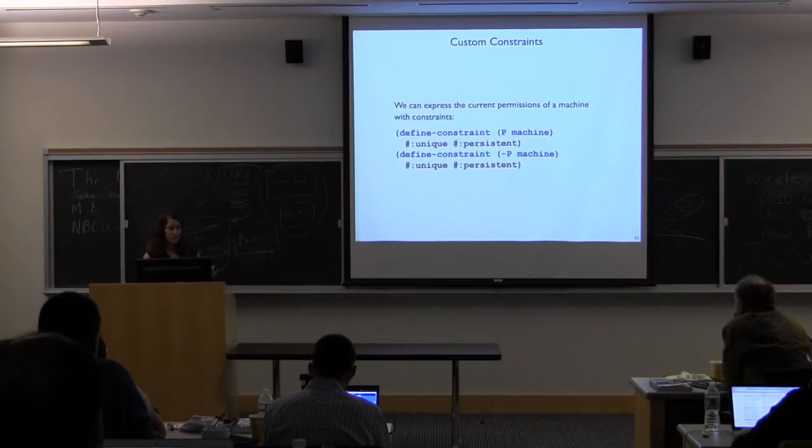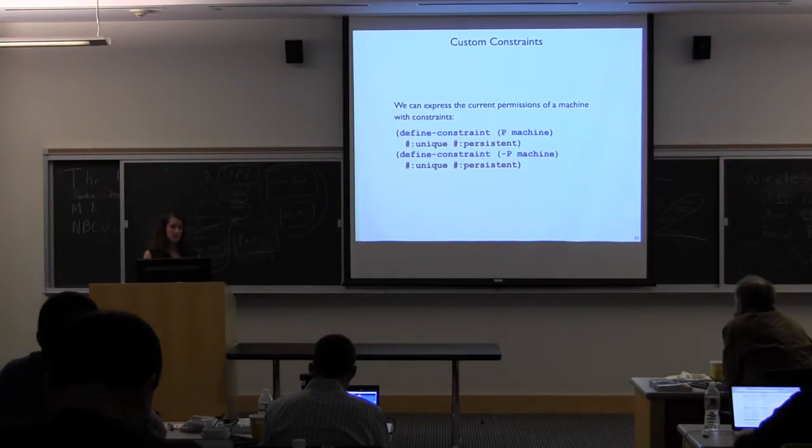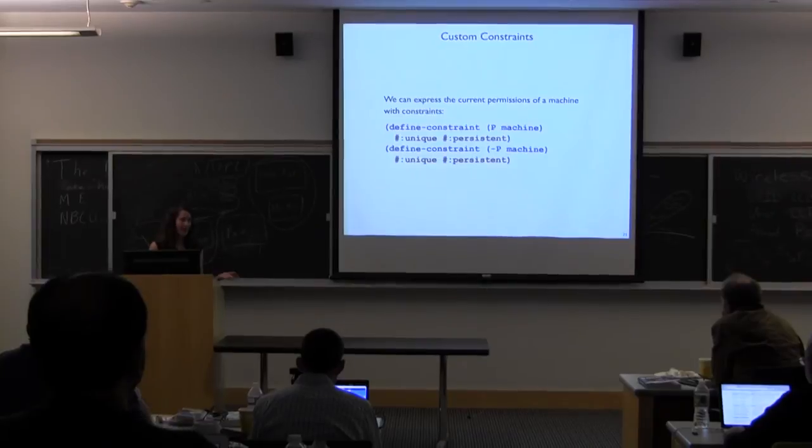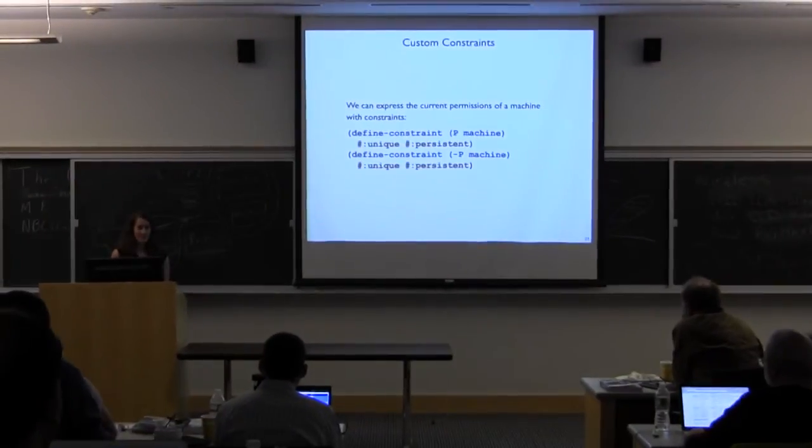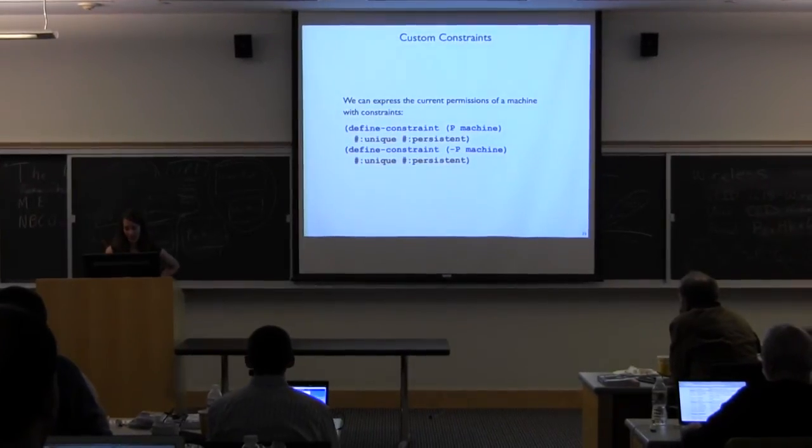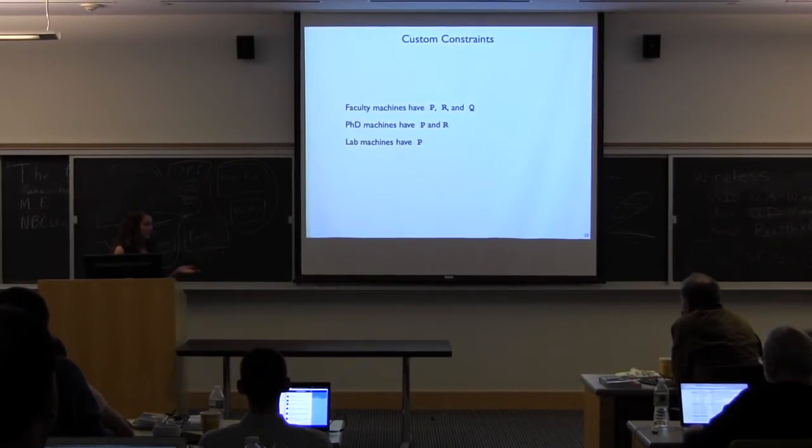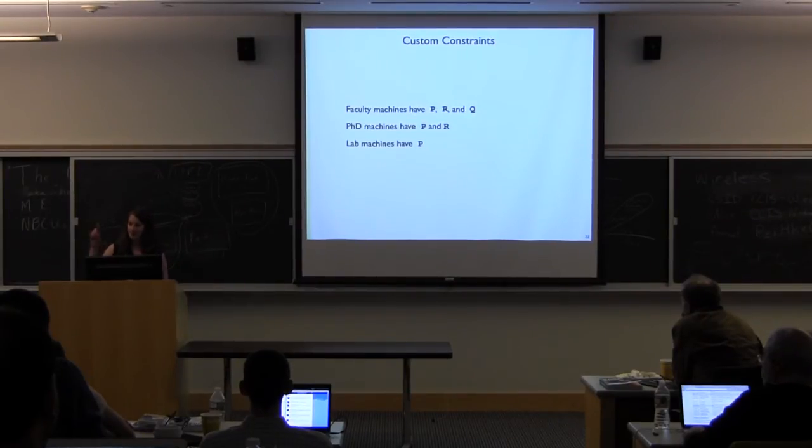So we're going to express this with custom constraints within C-Cannon. So we can express the current permissions of a machine with constraints that look like this. So P is the constraint that says, this machine has this print permission. And then we have a constraint that says it doesn't have this print condition. The keywords just mean that it's unique. We only have to keep track of one copy of this constraint in store. And it's persistent. That means it's not going to go away unless we tell it to go away. So like I said before, we want faculty machines that have all the permissions. We want PhD machines not to be able to mess with the queues of other PhD machines. We want lab machines that only have permission to print.